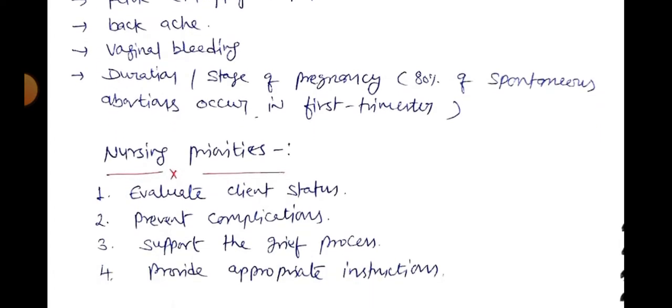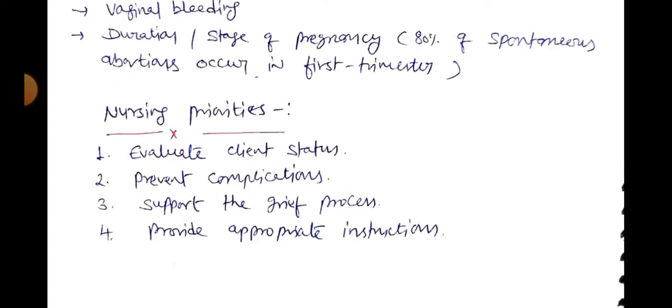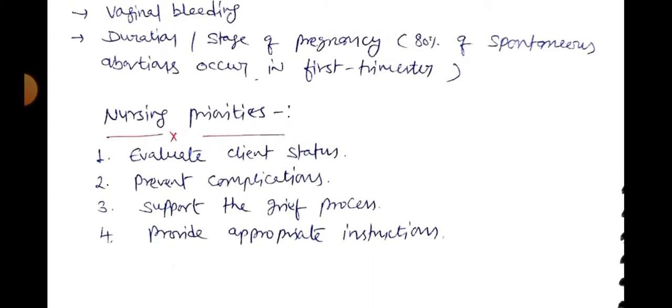The nursing priorities for this condition are: evaluate client status, prevent complications, support the grief process, and provide appropriate instructions. These are the nursing priorities of spontaneous termination of pregnancy or abortion.